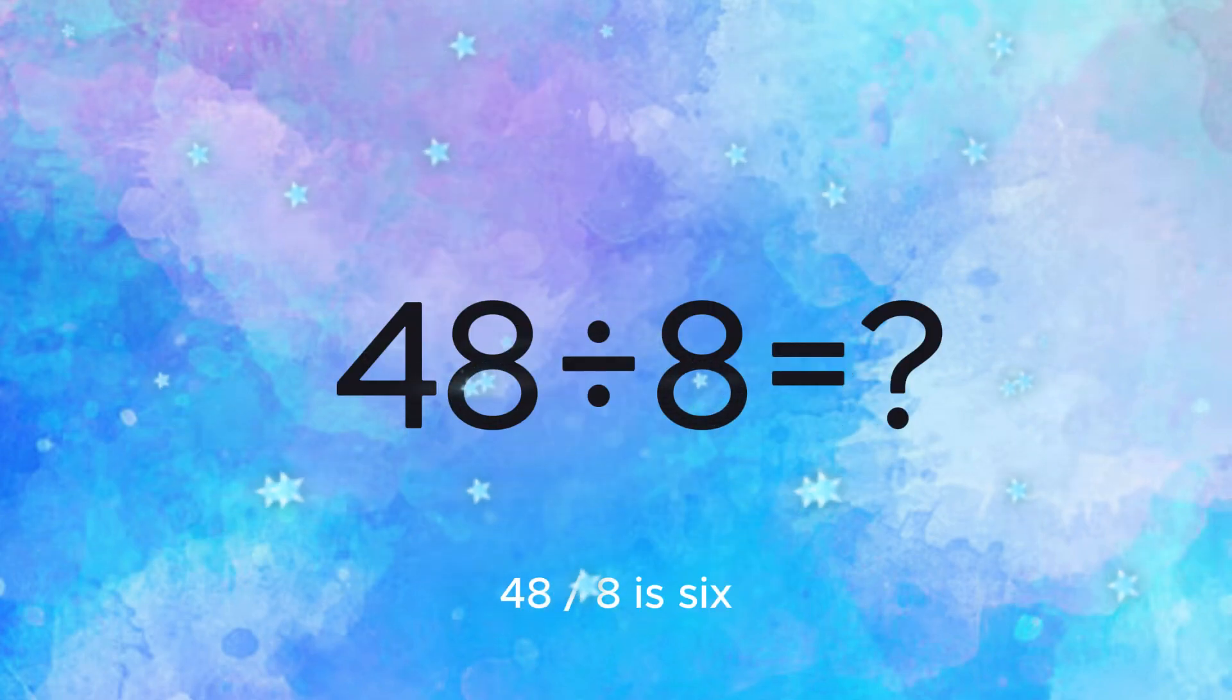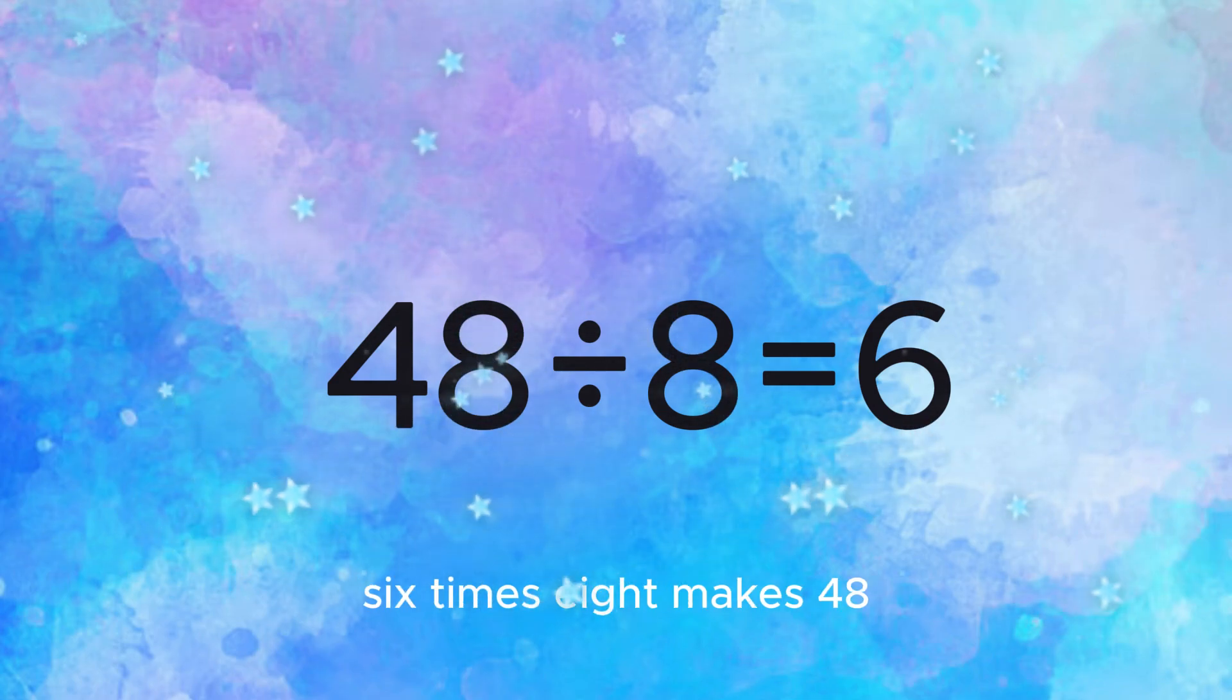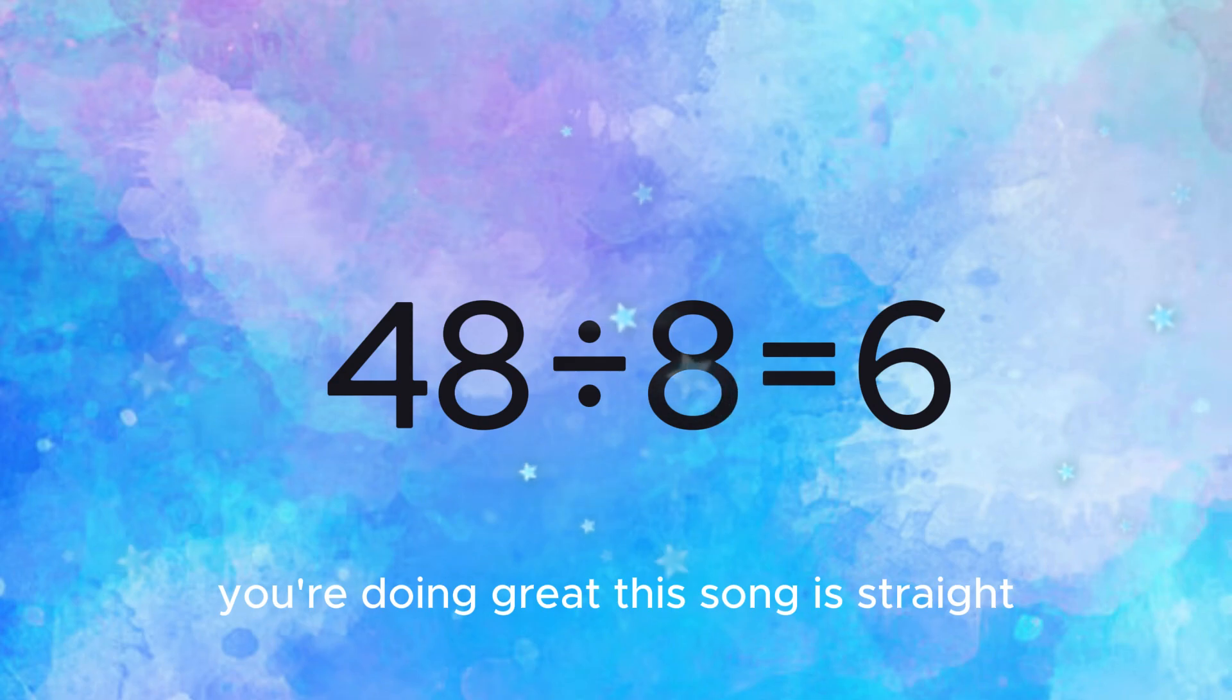48 divided by 8 is 6. A simple math that really sticks. 6 times 8 makes 48. You're doing great, this song is straight.